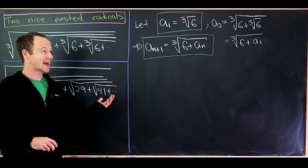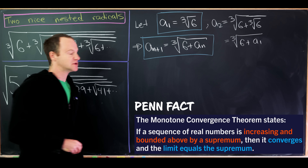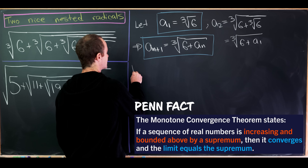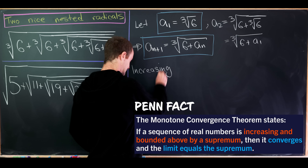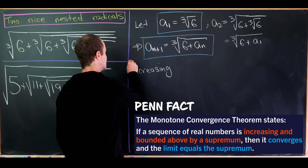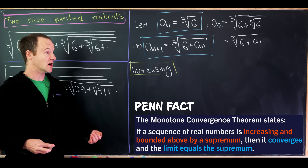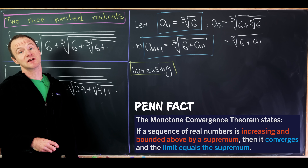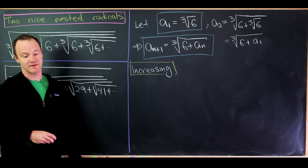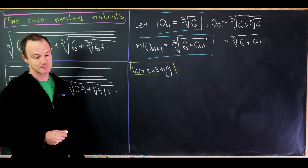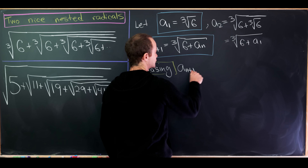To make sure this limit exists we'll use the monotone sequence theorem. We'll first show the sequence is increasing, then show it's bounded above. By the monotone sequence theorem that tells us it must converge, and then we can use a trick via its recursive definition to calculate the limit quite easily.